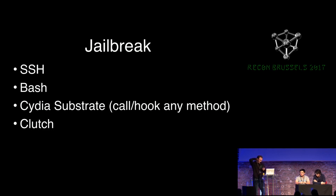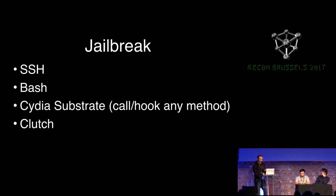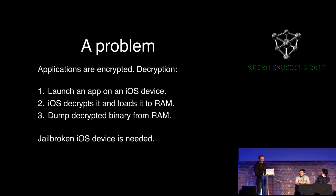Let's quickly review what we can do on a jailbroken iOS device — of course, none of this is available on a stock iOS device without jailbreak. First of all, we can connect to the device using the SSH protocol and get a bash command line. There is also a code injection platform called Cydia Substrate, which provides an API to call any method from the runtime of any running iOS application, and also allows us to hook any such method and change its implementation. Finally, there is Clutch, an out-of-the-box tool to decrypt and dump iOS applications.